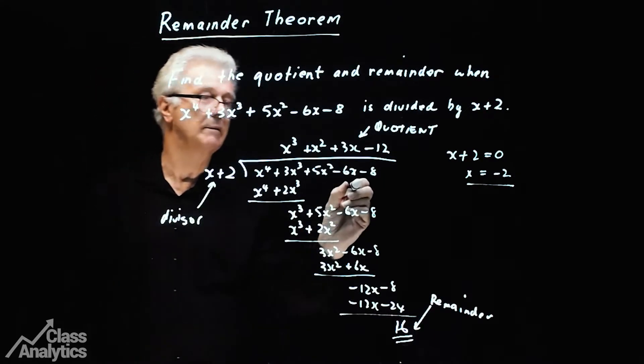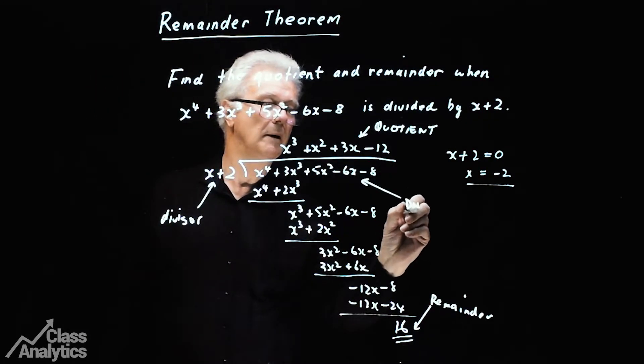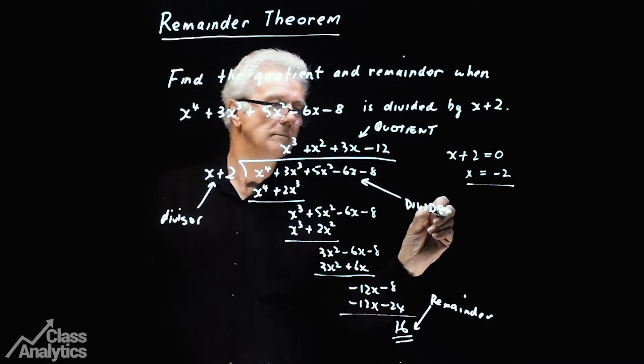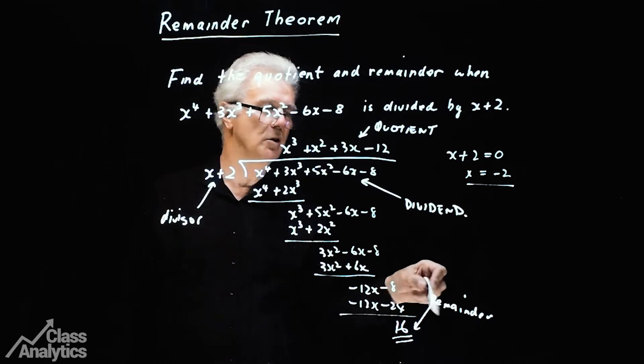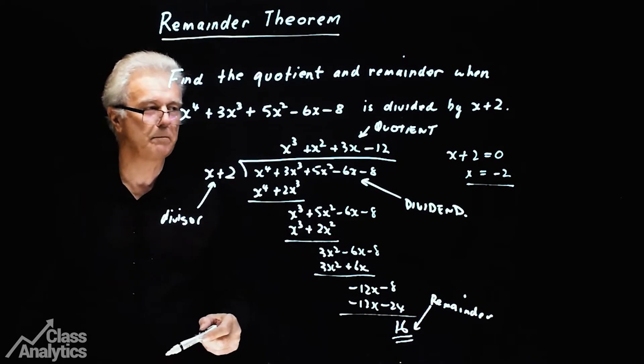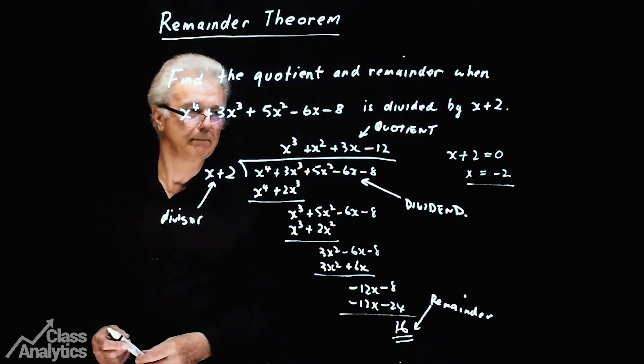And this one over here, which is the polynomial, is called the dividend. The important ones to know are the quotient and the remainder, because the question may ask you for that, okay? So you'll know what they're asking for. Okay, it's done.